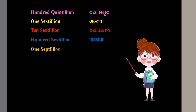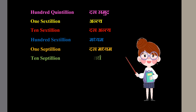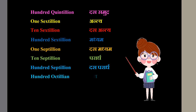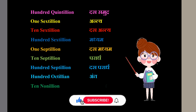1 septillion means 10 Madhyam. 10 septillion means Parath. 100 septillion means 10 Parath. 100 octillion means Antya. 10 nonillion means Maha Antya.